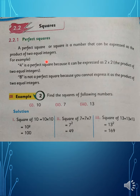Here is an example: 4 is a perfect square because it can be expressed as 2 multiplied by 2 — the product of two equal integers. So the answer 4 comes from multiplying the same number twice. That makes 4 a perfect square.